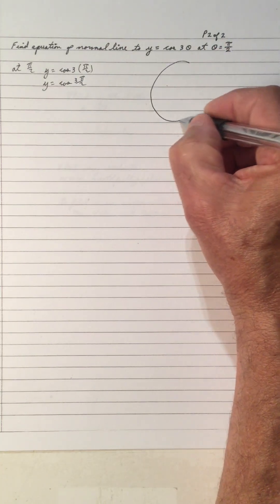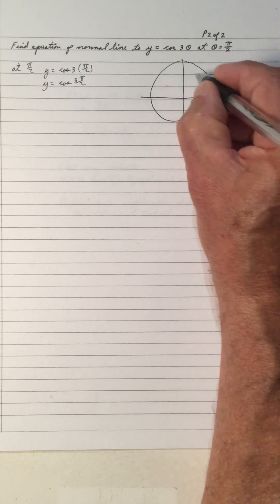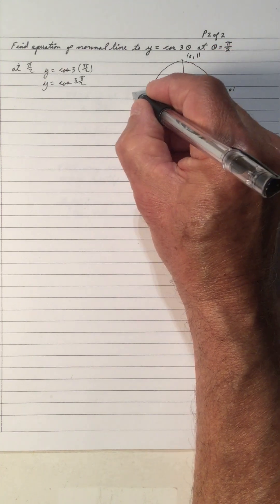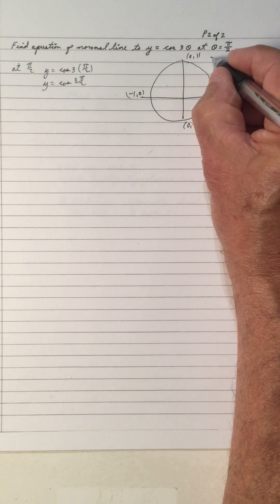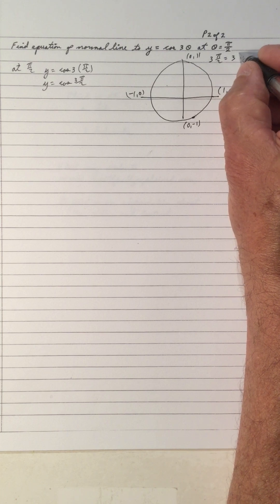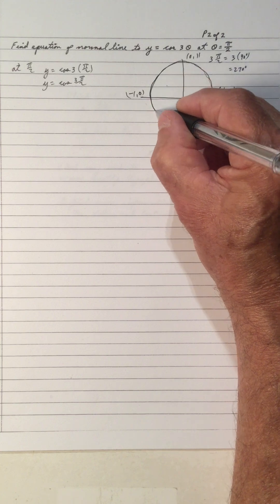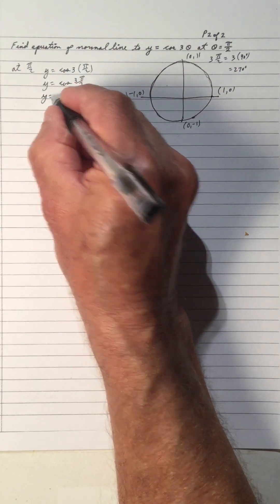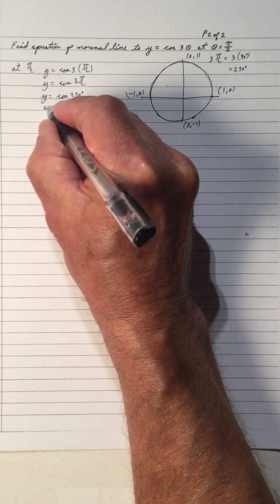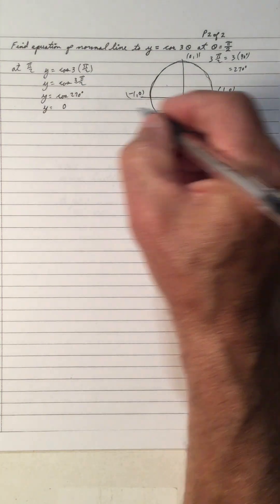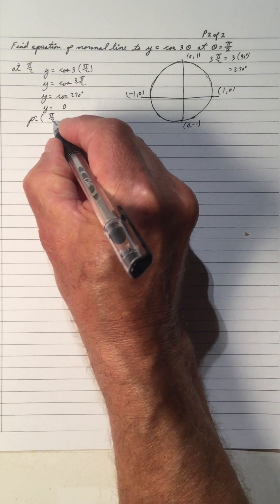If we take a unit circle whose radius is 1, 3 pi over 2 is the same as 270 degrees. If we rotate around to 270 degrees, the cosine is the x-coordinate, so cos of 270 degrees equals 0. That means the point where we find the equation of the normal is (pi over 2, 0).